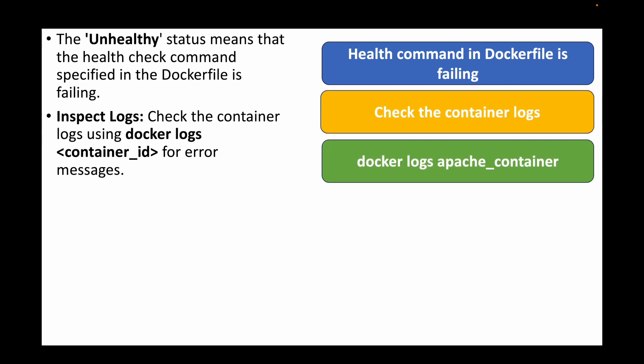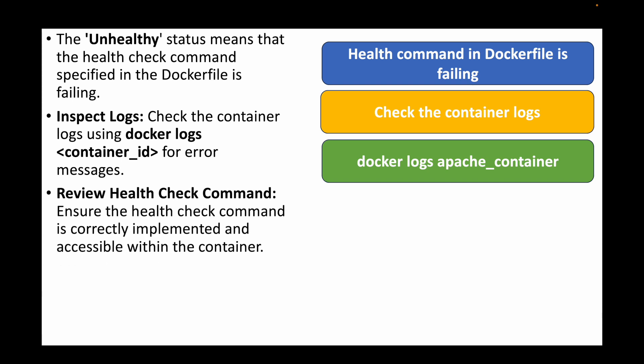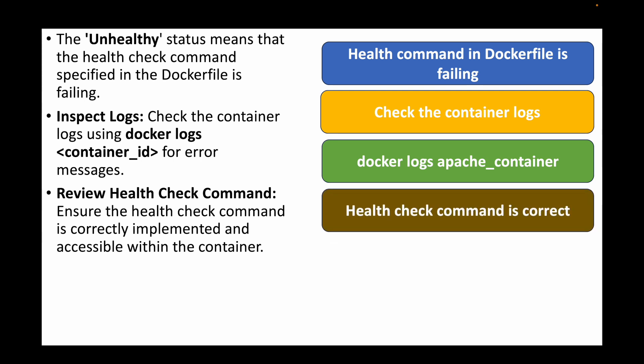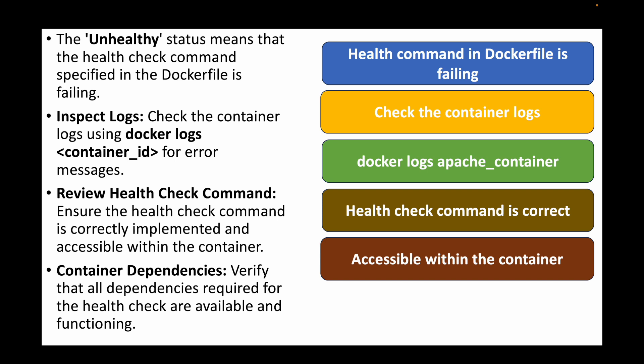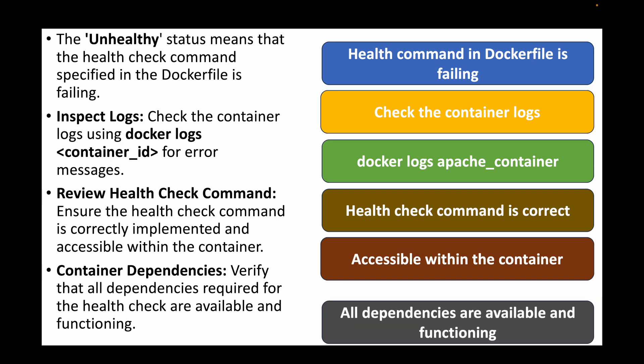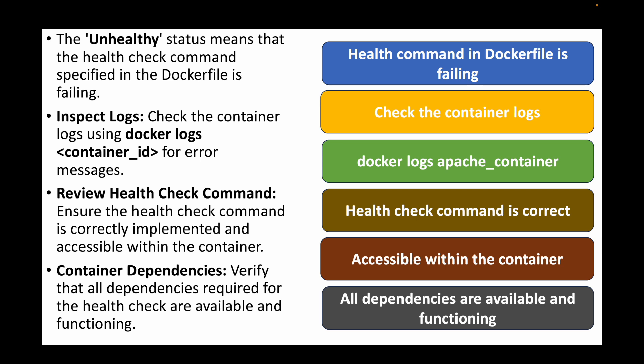To troubleshoot, check the container logs using `docker logs <container_name>` — for example `docker logs apache_container` — to find any errors. Also review the health check command itself to make sure it is correct and accessible within the container, including any URL you are passing. Finally, verify that all dependencies are available and working as expected for the health check to pass.